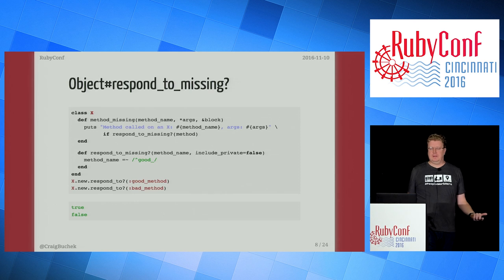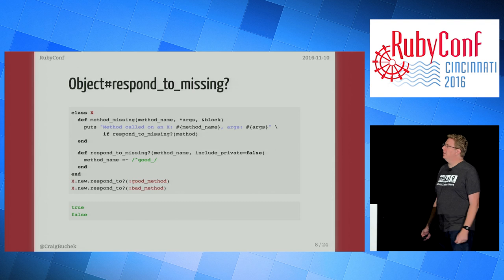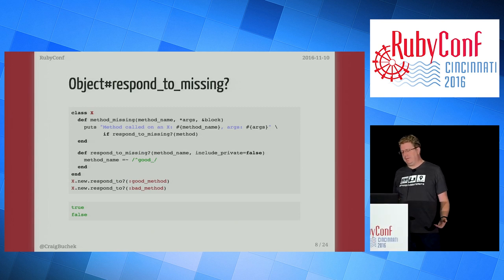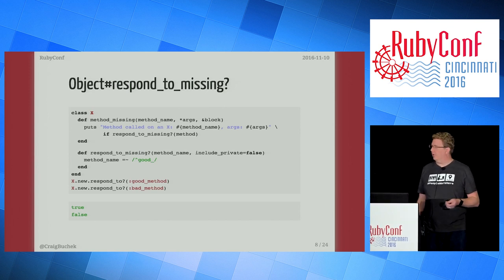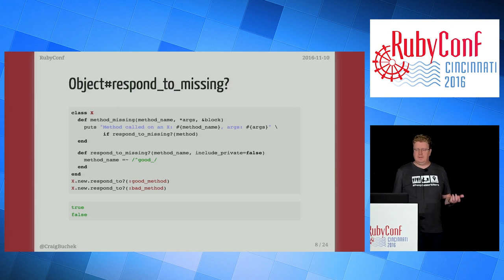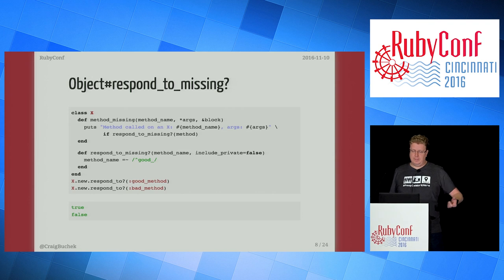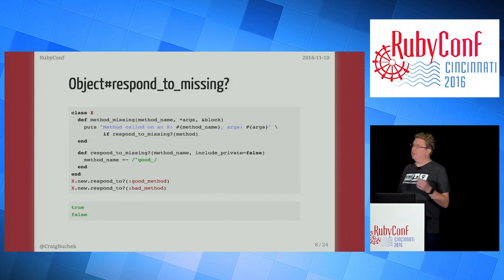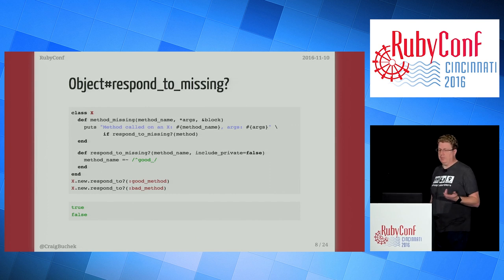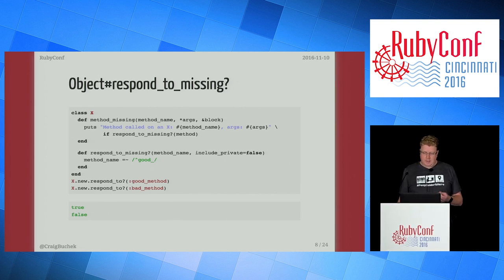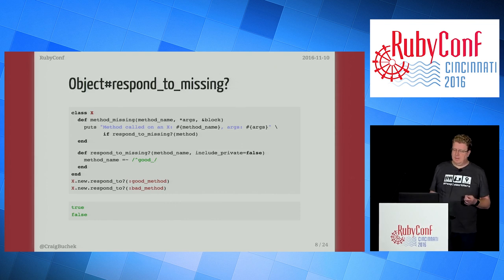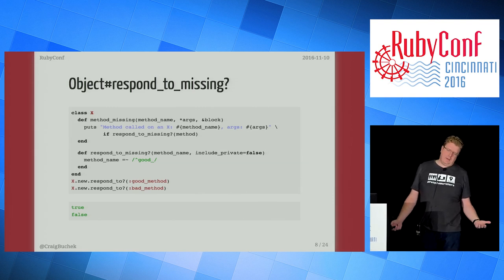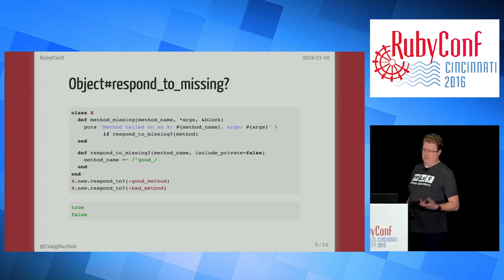Whenever you use method_missing, you should also use respond_to_missing?. Note that while method_missing was on BasicObject, respond_to_missing? is on Object. So if you're subclassing from BasicObject only, you don't need to follow that rule — otherwise, definitely follow it. If you ask an object whether it responds to a method and that method is not listed in the class, Ruby will look at respond_to_missing?. Before Ruby 1.9.2, we just overrode respond_to — this way is a lot cleaner. It's also called when you call the method method. Note that it takes a second argument, include_private, defaulting to false — respond_to takes a second argument that, if true, will look for private methods as well as public methods.